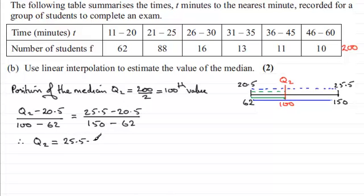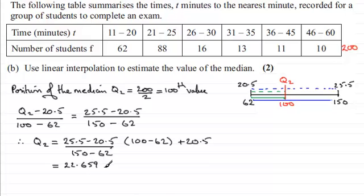So what we get is Q2 equals this fraction here, 25.5 minus 20.5 divided by 150 minus 62. All of this fraction is multiplied then by 100 minus 62 value here, and then we add the 20.5. And if you work this out, you end up with 22.659 and so on. And if we round this to three significant figures, you're going to get 22.7 to 3SF, three significant figures.